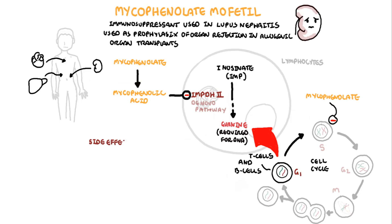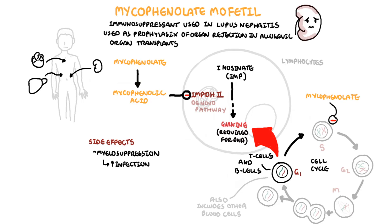Important side effects of mycophenolate include myelosuppression, because other blood cells also use the cell cycle to proliferate, so mycophenolate can disrupt these cells, leading to myelosuppression and increased risk of infection. Important GI symptoms include diarrhea as well. Another important point is that mycophenolate can be stopped three months prior to a planned pregnancy without causing any issues.